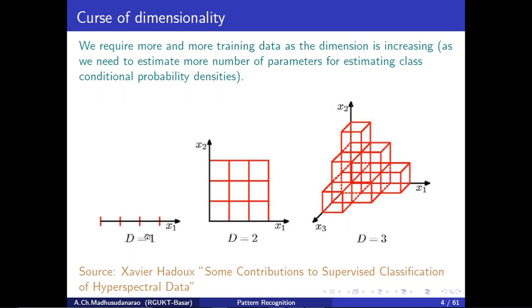If we go to two-dimensional data — x̄ is 2×1 — and follow the same partitioning of 3 parts per feature, we now have 3×3=9 parts total. You need to estimate nine parameters to get the likelihood function for each class. For d=3, that becomes 3×3×3=27 parameters. And if d=100, you need 3^100 parameters — a very huge number.